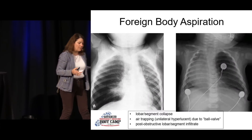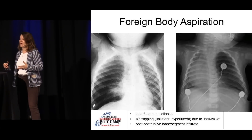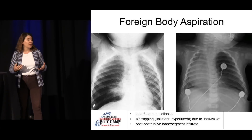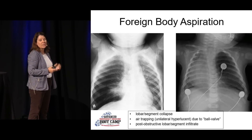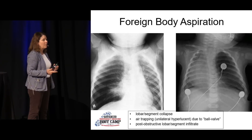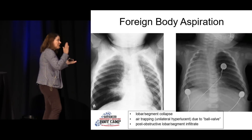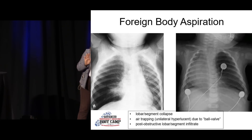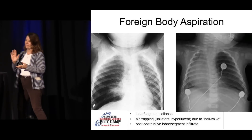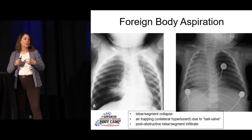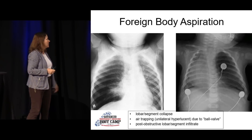A little bit on foreign bodies. A kid comes in with a story of choking — either asymptomatic or still symptomatic when they come to the ER. Your inclination is to get a chest x-ray. What might you see? You might see lobar or segmental collapse — they've got the foreign body there and everything distal just collapses behind it. You may see hyperlucency — they get that ball-valve appearance and get hyperlucent behind the foreign body. And you can get a post-obstructive infiltrate — the foreign body is there, there's edema in the area and it gets an infiltrate.